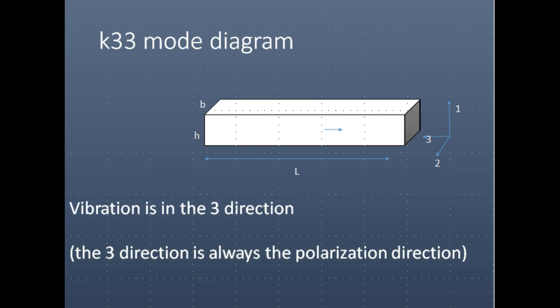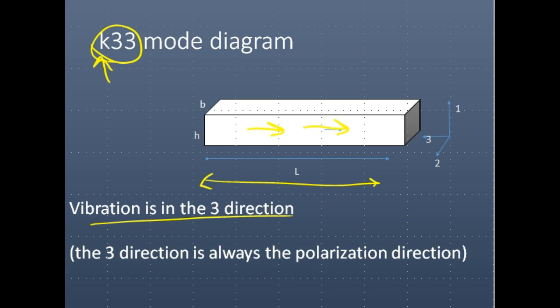This is the K33 mode. In this mode, the polarization direction is in the 3-direction, and the vibration is also in the 3-direction. K33, K31, K15 — these are standard labels referring to certain resonance modes. The length is also the thickness because we've polarized this material in the length or thickness direction. The vibration is always in the 3-direction, and the largest response will be in the 3-direction because the geometry and resonance frequency are dominated by this effect.